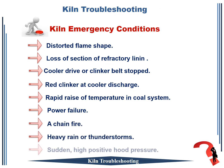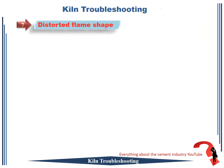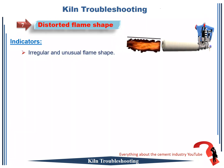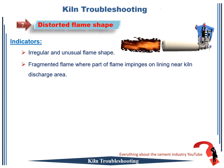Rotary kiln troubleshooting number 7: distorted flame shape. The important indicators from this case: 1. irregular and unusual flame shape; 2. fragmented flame where part of the flame impinges on the lining near the kiln discharge area.